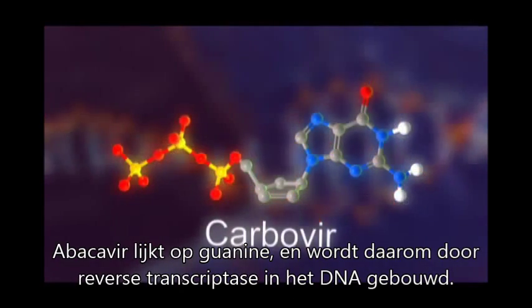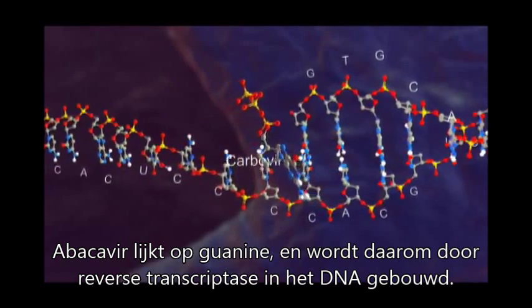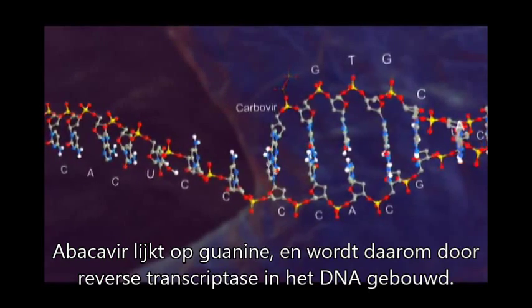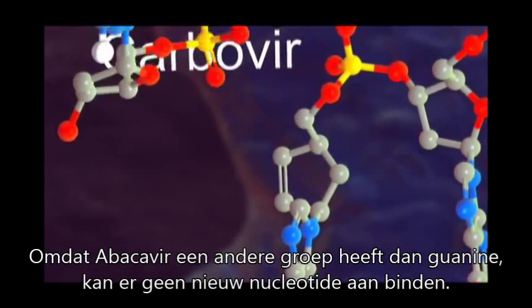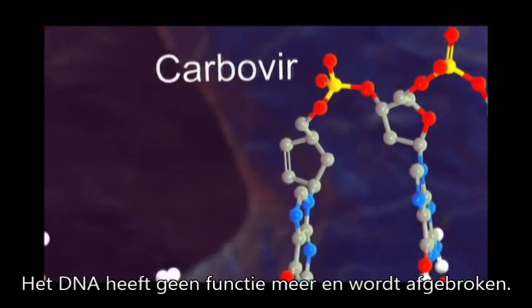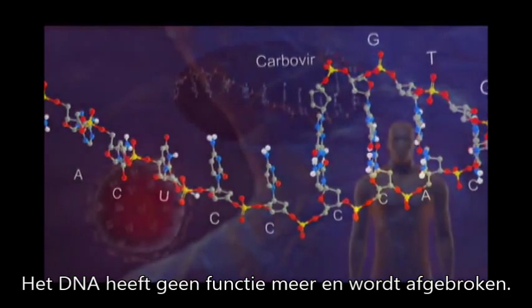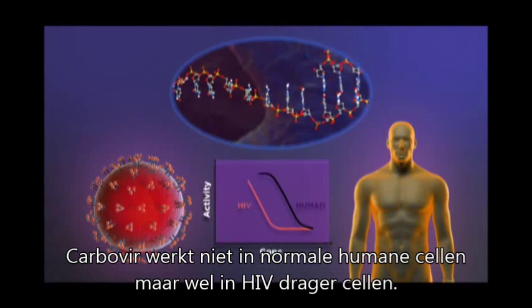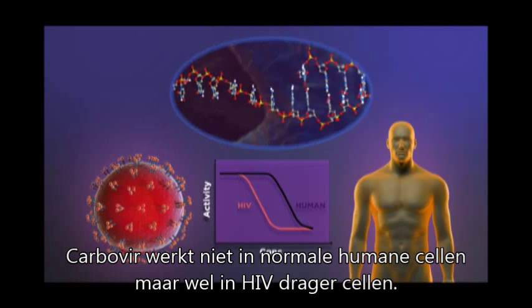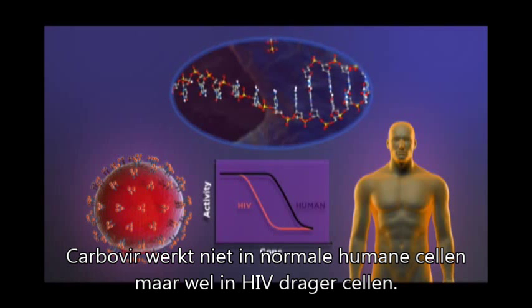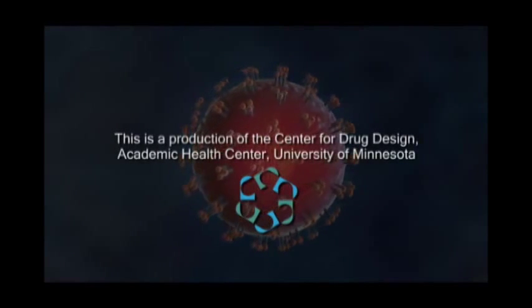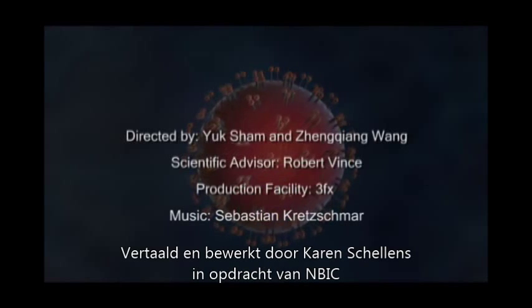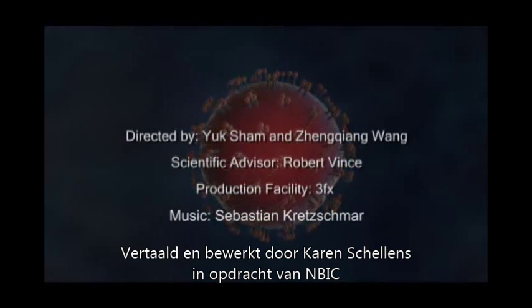Carbavir triphosphate mimics deoxyguanosine triphosphate and becomes incorporated into the viral DNA at the guanine position. Since Carbavir lacks the three prime hydroxyl group, chain elongation of the viral DNA is terminated at its point of incorporation. Carbavir has been shown to exhibit low inhibition against human DNA polymerases, making it a selective inhibitor against HIV reverse transcriptase.